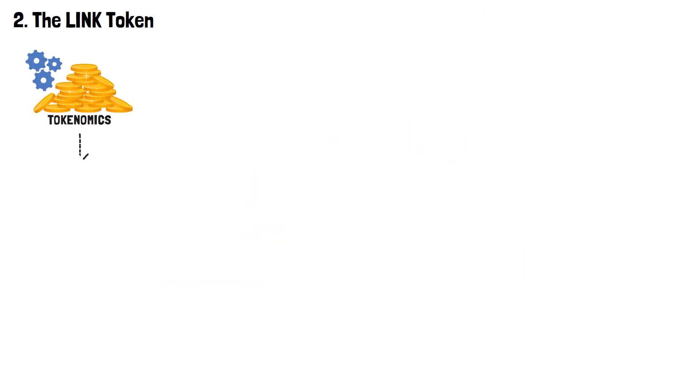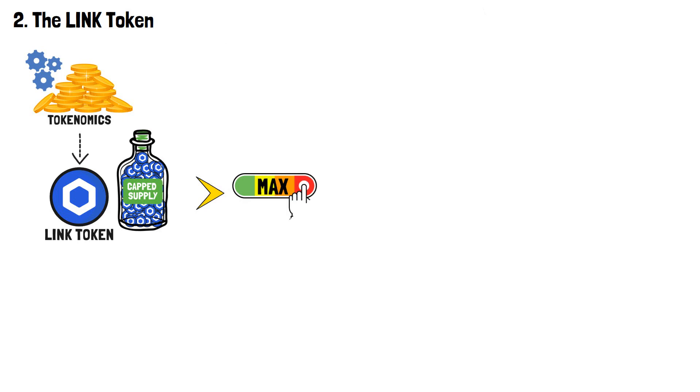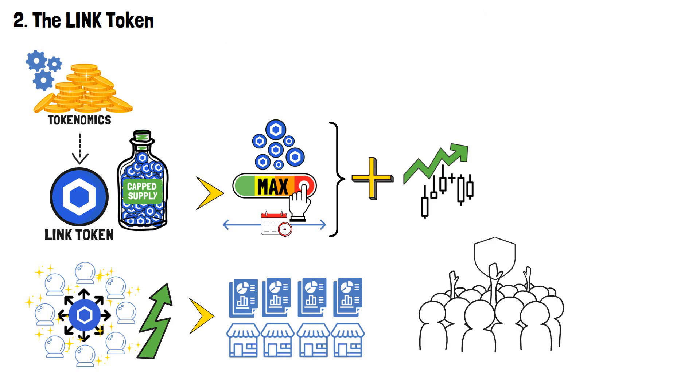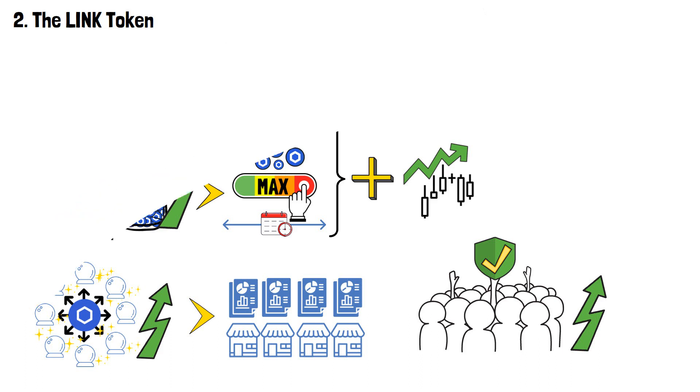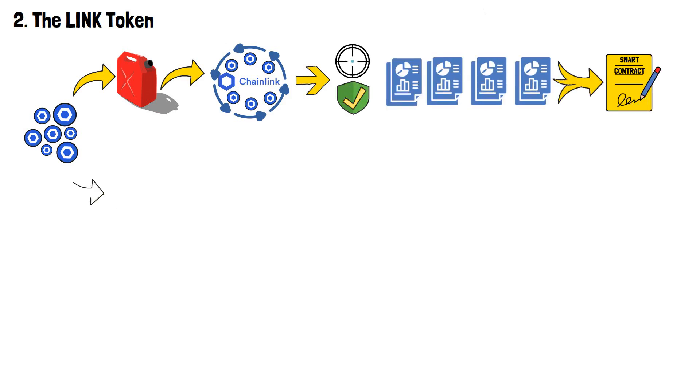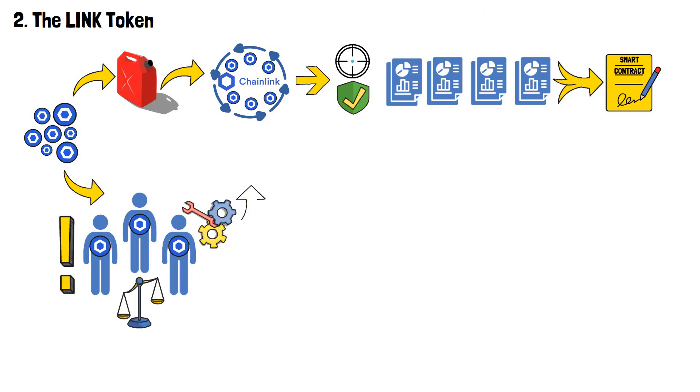When it comes to tokenomics, LINK has a capped supply, meaning that there is a predetermined maximum number of tokens that can ever be created. This scarcity adds to the token's value proposition. As the network continues to grow and more data feeds are integrated into smart contracts across various industries, the demand for reliable Oracle services increases, potentially driving up the demand for LINK tokens. In essence, LINK tokens serve as the fuel that powers Chainlink's decentralized Oracle network, ensuring the accuracy and security of data feeds for smart contracts. They also grant stakeholders the ability to influence the network's evolution, making them integral to the ongoing success and innovation of the Chainlink ecosystem.